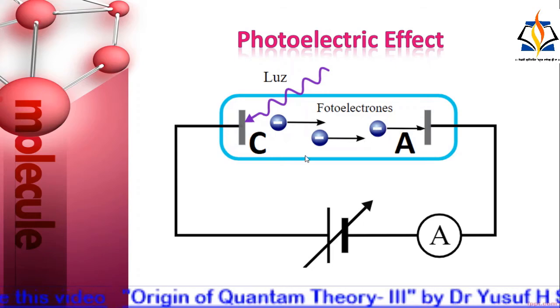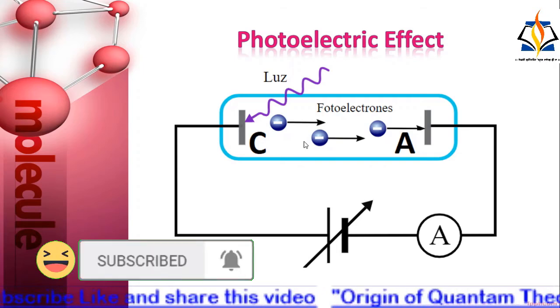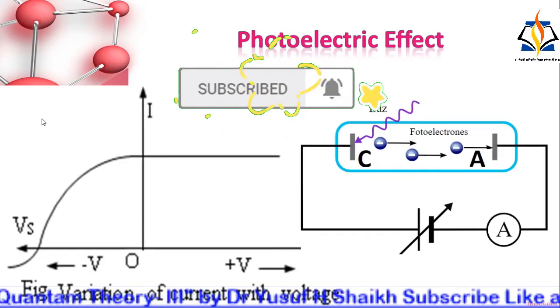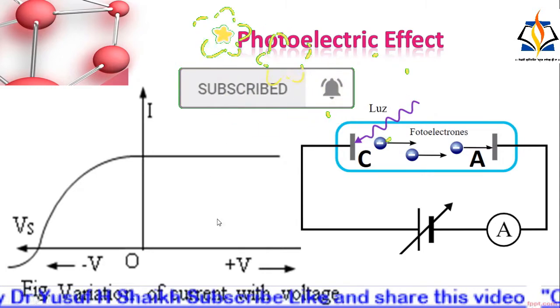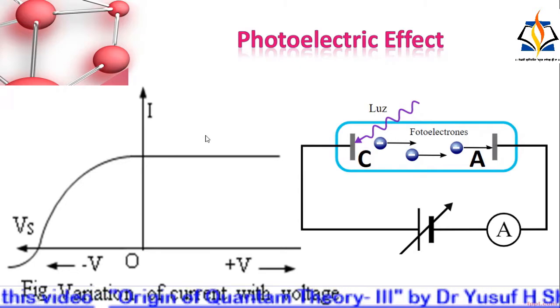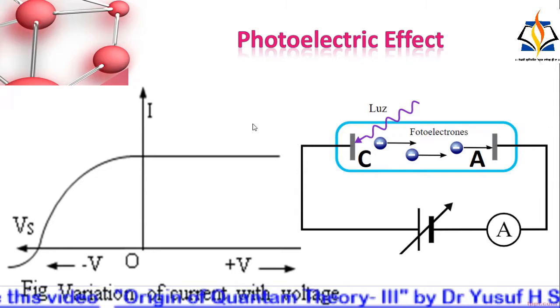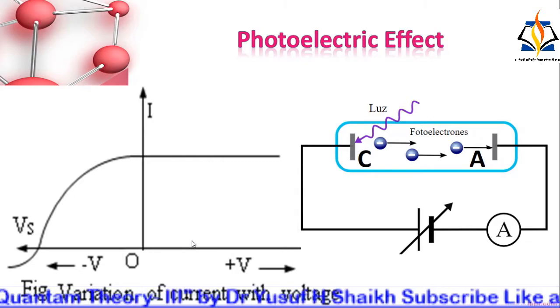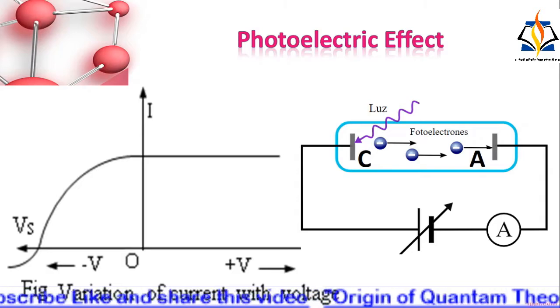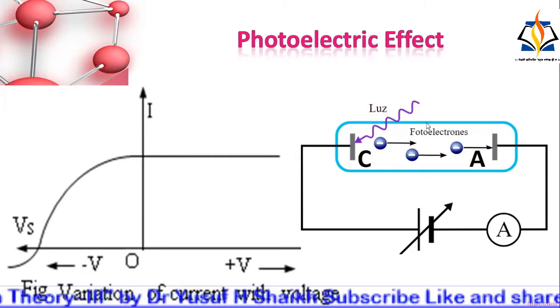When the voltage across the plate is varied, the current also varies. This is the curve of photoelectric current with voltage. When the voltage is increased, the current increases till it reaches a saturation value. This happens when all the emitted electrons are collected by the plate.